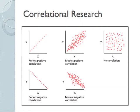A correlation coefficient measures the direction and magnitude of a relationship between two variables, typically two variables within the same person. A perfect positive correlation is where the higher the person scores on X, the higher they are on Y — that would be plus one. In social science, a very strong positive correlation might be something like 0.7 or 0.8.